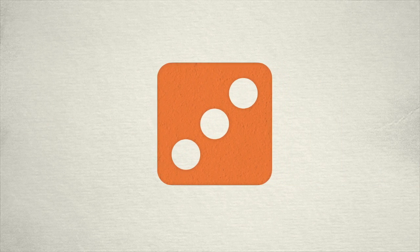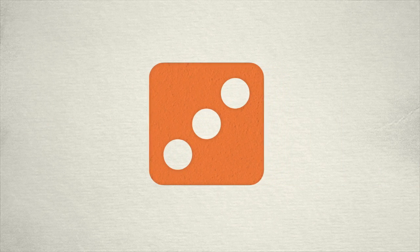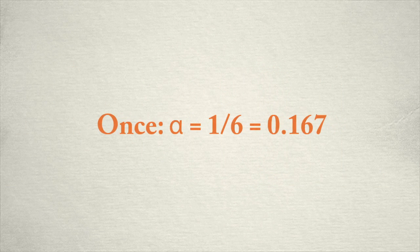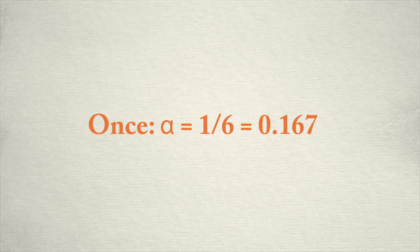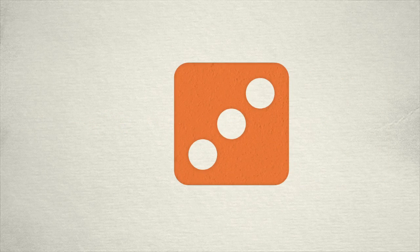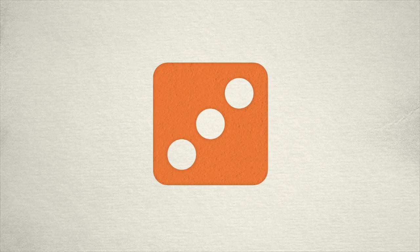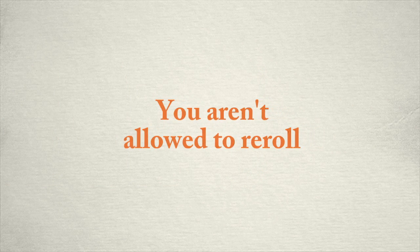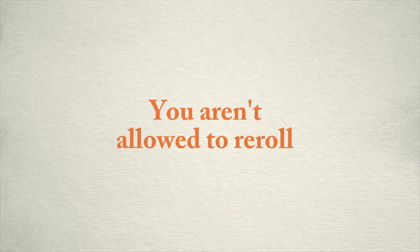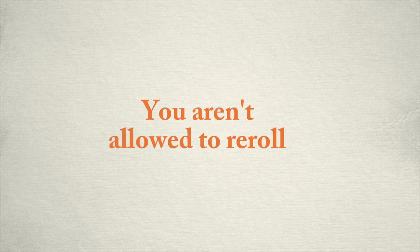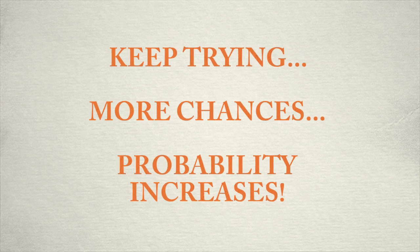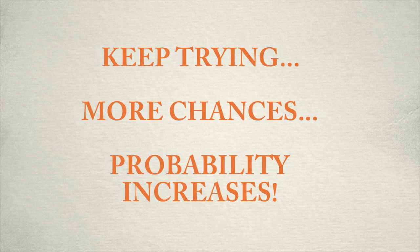Think about it like this. If we rolled a six-sided die, what is the probability that we would roll a 3? Well, if we only roll it once, the probability will be 1 out of 6, or 0.167. What if we were allowed to just keep rolling until we got a 3? Would it still make sense to say that the probability was 1 out of 6? This is basically like a child who's losing miserably at Monopoly, constantly re-rolling the dice until they finally land on Boardwalk. If you get to keep trying, you have more chances for unlikely events to occur, and your probability increases. It's as easy as that.